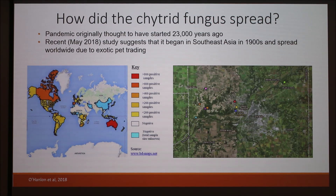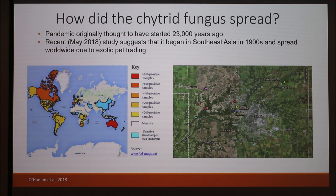What happens is people get frogs that carry the fungus and don't know what to do with them, so they release them into the wild. The zoospores come off that frog, enter the water systems, infect other frogs, and then start killing off populations. Unfortunately we don't have a lot we can do in the wild right now — we're still working on that. A lot of people have found that sodium chloride, a natural antifungal agent, can help, which is what we were studying this summer. It's really important that we work to address this because amphibians are critical to our ecological systems.